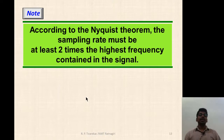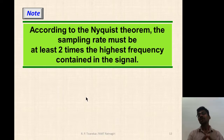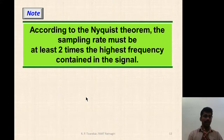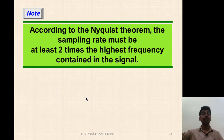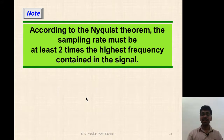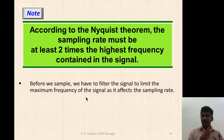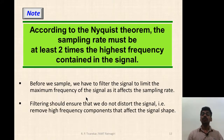According to the Nyquist theorem, the sampling rate must be at least twice the maximum frequency component present in the analog signal. So if the analog signal has a very high frequency component, its sampling rate will be double that frequency. To avoid very high sampling rates, it is generally useful to low-pass filter the original signal before sampling it. However, we must take care not to distort the signal by removing high-frequency components that affect the signal shape.